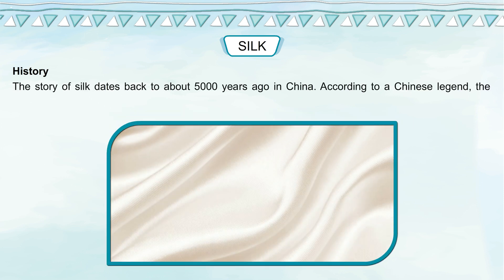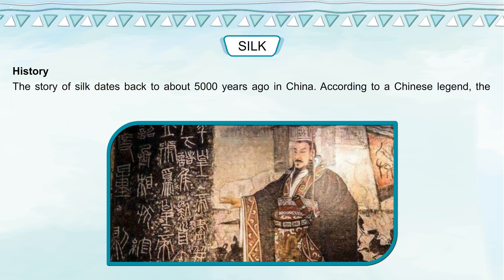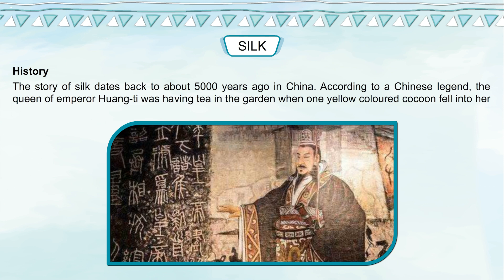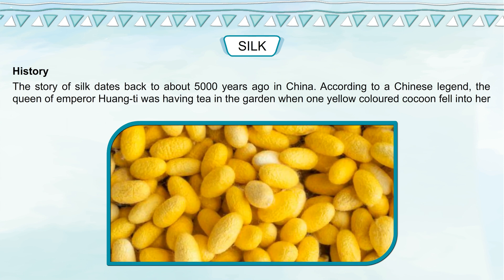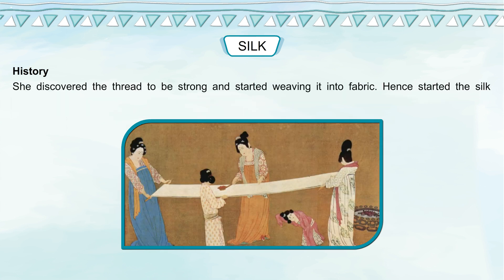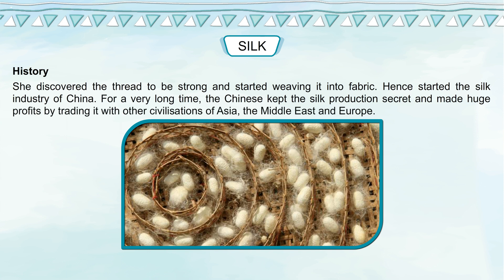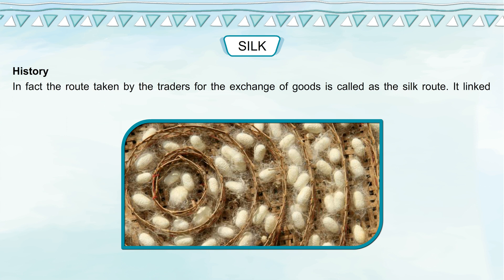The story of silk dates back to about 5000 years ago in China. According to a Chinese legend, the Queen of Emperor Huangti was having tea in the garden when a yellow-colored cocoon fell into her tea and strands of thread separated from it. She discovered the thread to be strong and started weaving it into fabric, and thus started the silk industry of China. For a very long time, the Chinese kept silk production a secret and made huge profits by trading it with civilizations of Asia, the Middle East, and Europe. The route taken by traders for this exchange of goods is called the Silk Route.